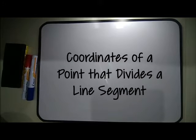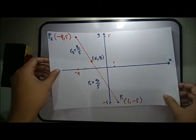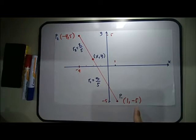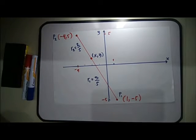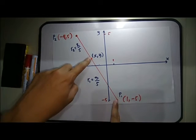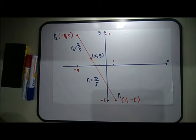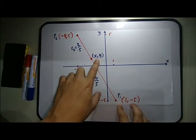In our first problem, we are determining the coordinates of the point which is three-fifths of the way from (1, -5) to (-4, 5). We have two points: Point 1 is (1, -5) and Point 2 is (-4, 5). The line segment is divided from Point 1 at three-fifths of the distance, so three-fifths corresponds to the ratio r1 and the remaining two-fifths corresponds to r2. The line segment is divided by a point whose coordinates are (x, y).